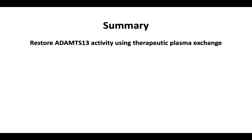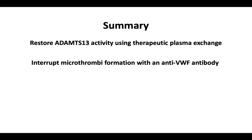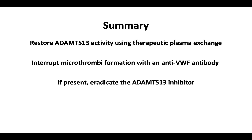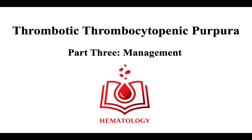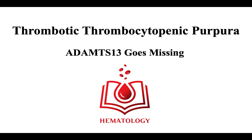In summary, to treat acute TTP: restore ADAMTS-13 activity using therapeutic plasma exchange and interrupt microthrombi formation with the anti-von Willebrand factor antibody caplicizumab. In acquired TTP patients with an ADAMTS-13 inhibitor, use immunosuppressive agents such as glucocorticoids and rituximab to eradicate the inhibitor. This brings us to the end of our three-part series on thrombotic thrombocytopenic purpura: ADAMTS-13 goes missing.